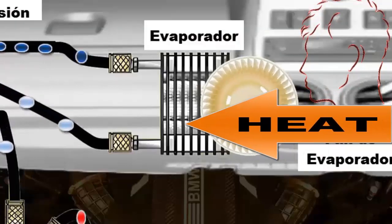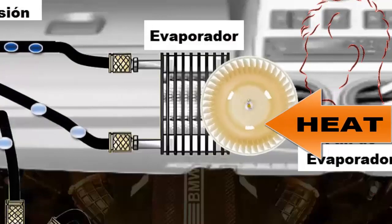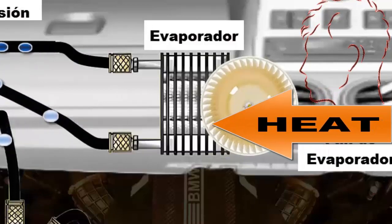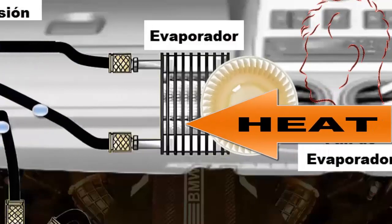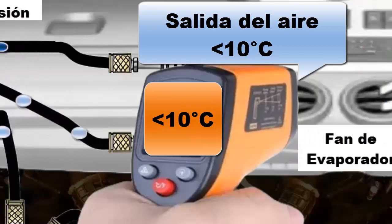The evaporator blower optimizes the heat exchange. In a properly functioning system, the air temperature at this point should be around 10 degrees Celsius or less.